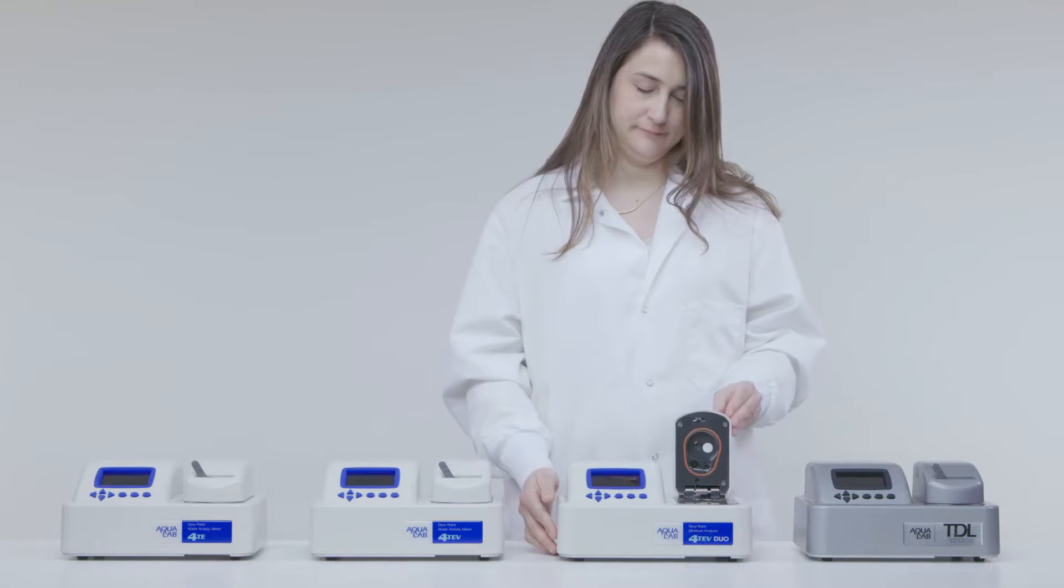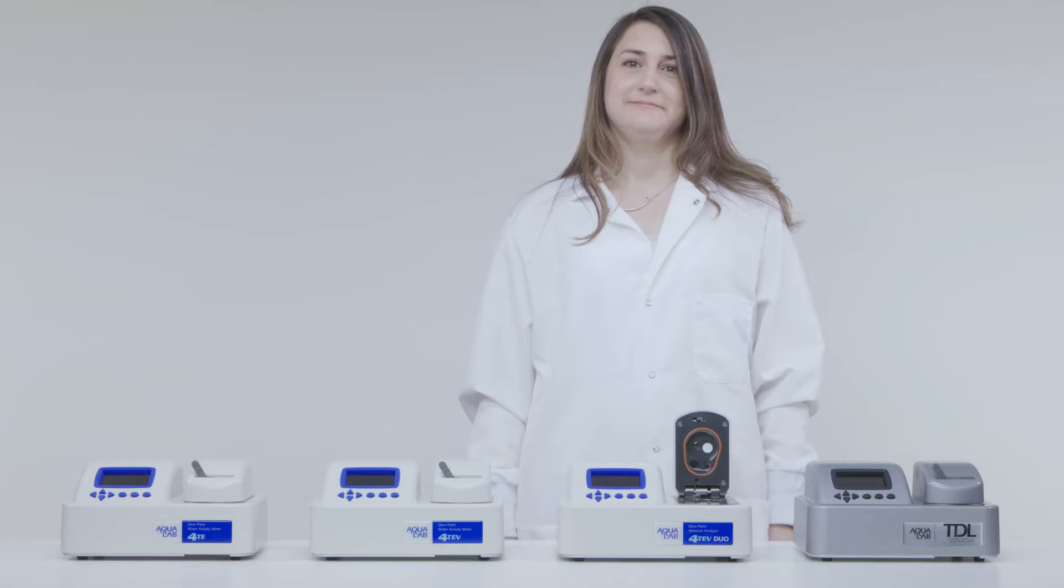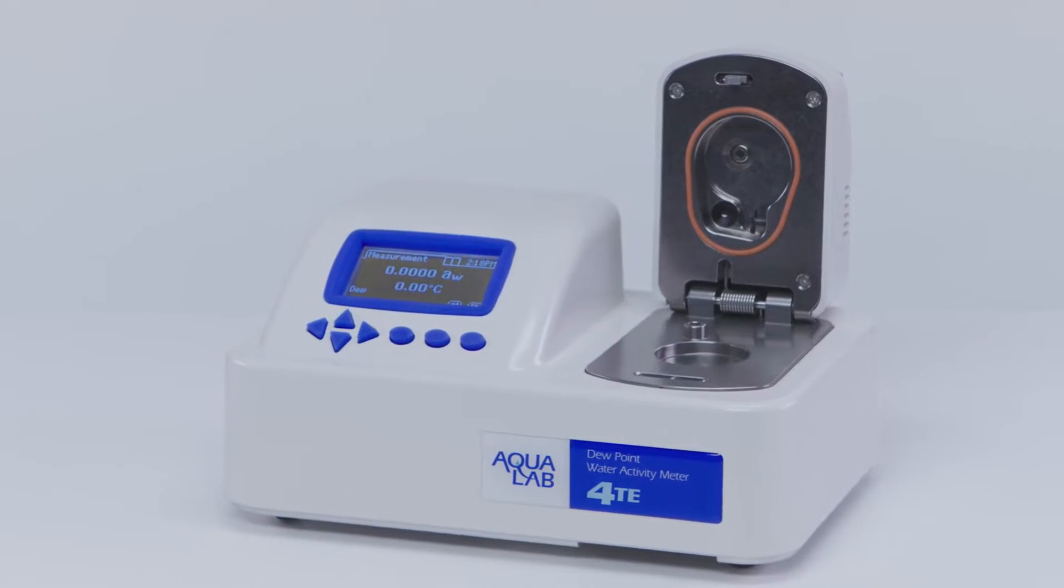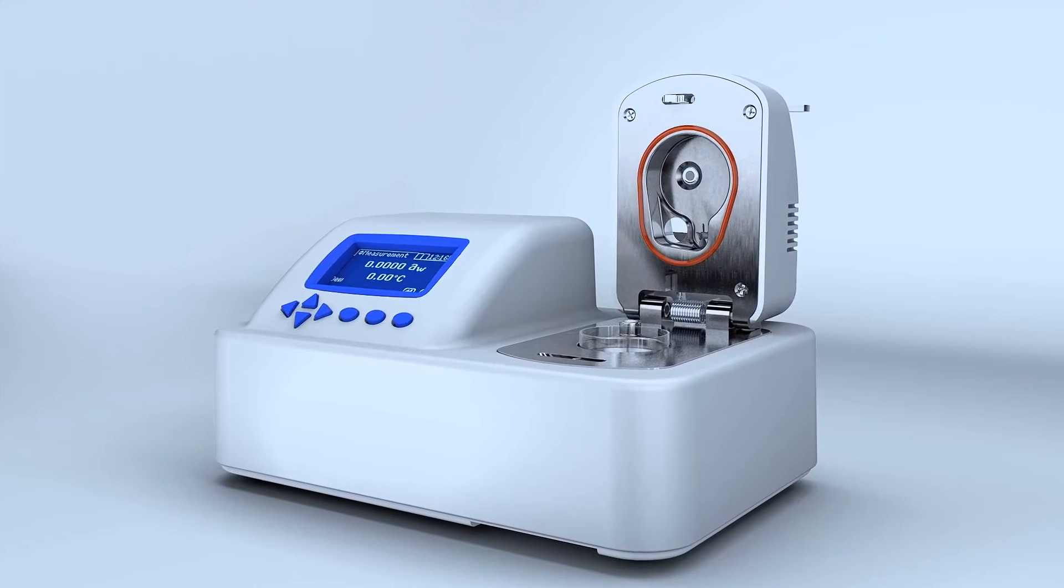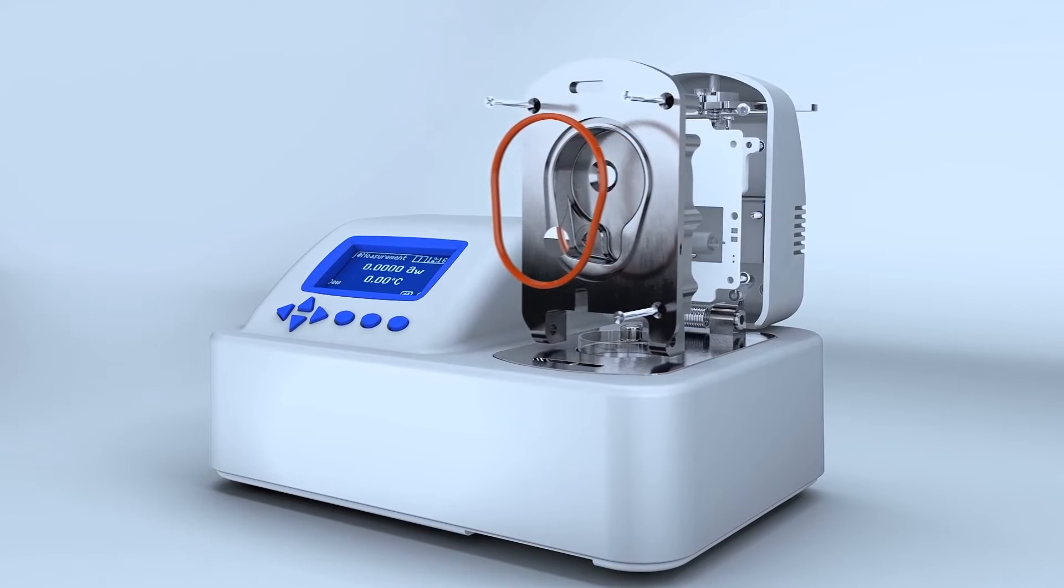There are four different types of Aqualab water activity meters. The one we're using in this video is the Aqualab 4TE. It uses the chilled mirror dew point method to measure water activity.